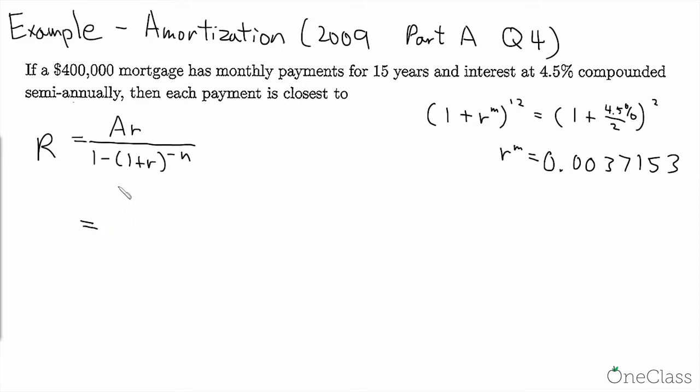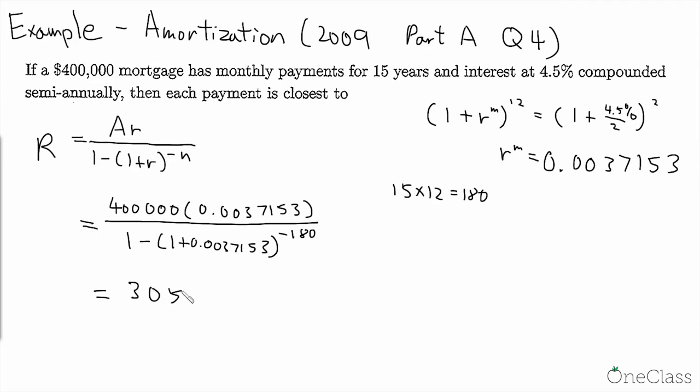So this equals to what's A. A is the original mortgage amount, so it's 400,000, and R as we found is 0.0037153, and then 1 minus (1 plus 0.0037153) to the power of what's N. So in this case we have 15 years and there are monthly payments, so it would be 15 times 12 which is 180. In the end the answer would be 3051.47, which matching to the multiple choice answer it would be 3050, which is B.